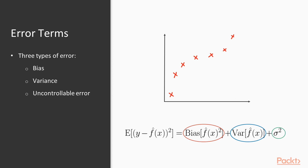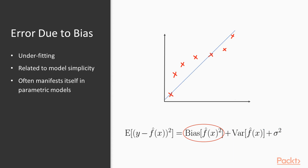Some models do well at controlling for both to an extent, but this isn't a dilemma that's always going to be present in your modeling considerations for the large part. We introduced bias at the end of section 2 as model error as a result of oversimplifying the relationship between x and y.